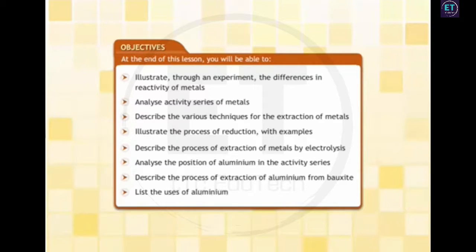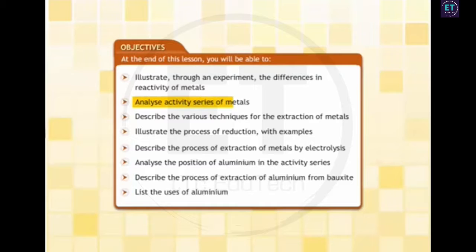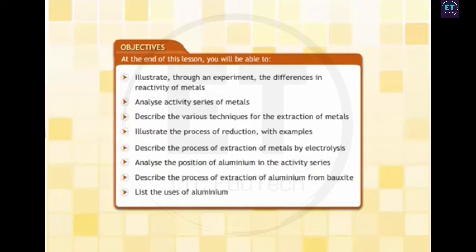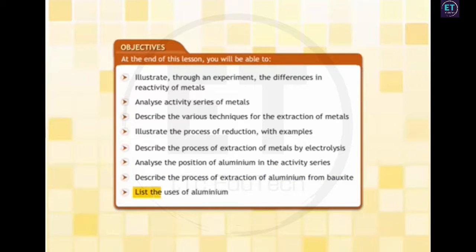You will learn in particular about the extraction of aluminium from its ores. At the end of this lesson, you will be able to: illustrate through an experiment the differences in reactivity of metals; analyze the activity series of metals; describe various techniques for the extraction of metals; illustrate the process of reduction with examples; describe the process of extraction of metals by electrolysis; analyze the position of aluminium in the activity series; describe the process of extraction of aluminium from bauxite; and list the uses of aluminium.